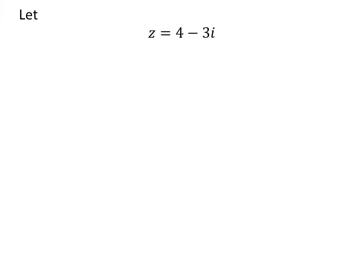Let us assume z be equal to 4 minus 3 times i. We know, multiplicative inverse of z is equal to conjugate of z upon square of modulus of z.